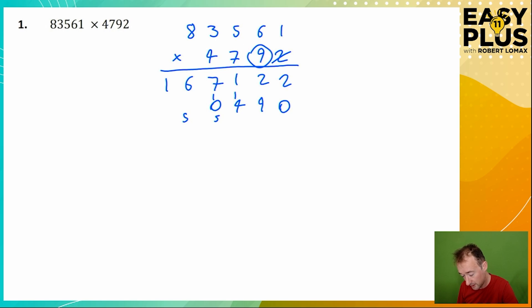9 times 5 is 45, we've got the carried 5 which makes it 50. 9 times 3 is 27, we've got the carried 5, makes it 32. 9 times 8 is 72, and we've got the carried 3, that makes it 75.